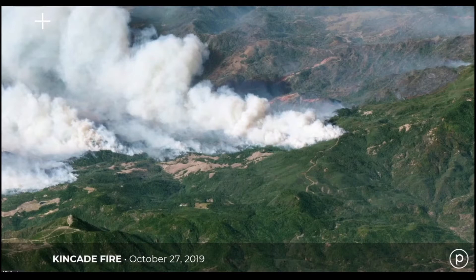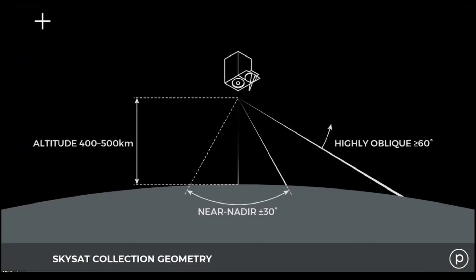Let's take a look at how oblique imagery is acquired with the help of this image of another California disaster — the Kincaid fire from late last year. To acquire this image, Planet had to operate their satellite in a way that's quite non-standard. Typically, a high-resolution satellite is going to be looking near nadir — plus or minus 30 degrees — while highly oblique imagery is more 60 degrees and above, and that really gives you that sideways look at the Earth's environment.